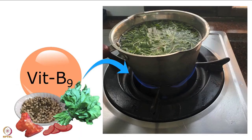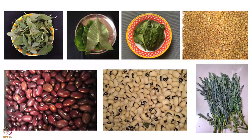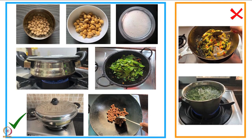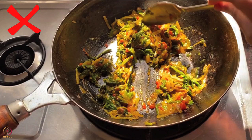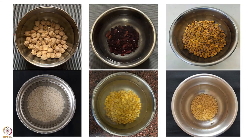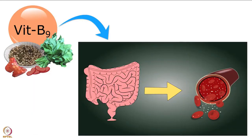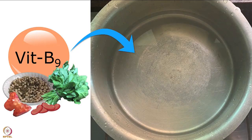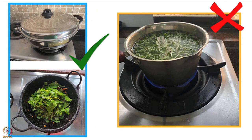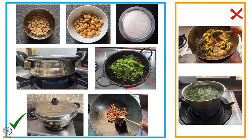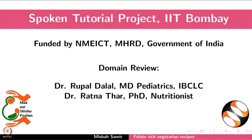As folate is sensitive to heat, some amount gets destroyed while cooking, so folate content is calculated based on raw ingredients. To reduce folate loss during cooking: cook on low to medium flame, avoid repetitive heating of food, soak pulses and beans overnight before cooking to reduce cooking duration. For better absorption, fermentation and roasting will help. Folate is also sensitive to water, so steam or sauté vegetables instead of boiling. Sprouting and cooking whole beans will enhance folate content.